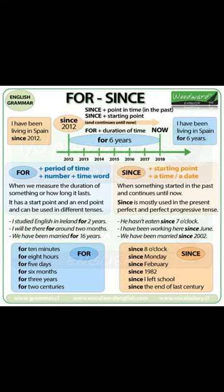Here are some example sentences. 'I studied French in Paris for two years' — this talks about a duration of two years and is in the past tense. 'I will be there for around two hours' — this is in the future tense. 'They have been married for 27 years' — this is in the present perfect tense.